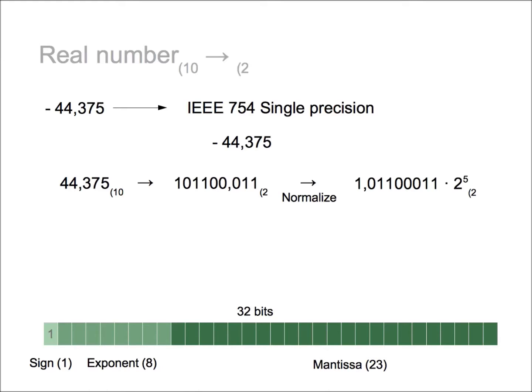To fill the mantissa block, we forget the integral number because it always means 1 and only use the fractional part.